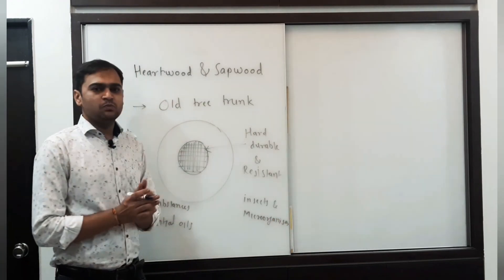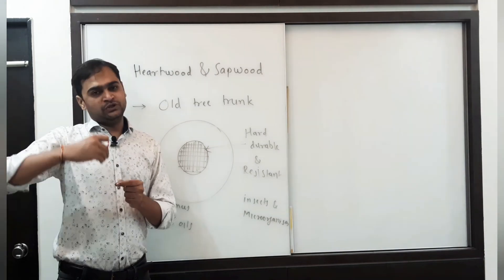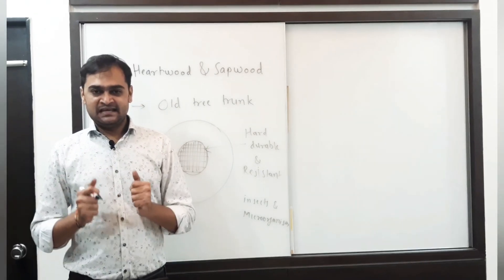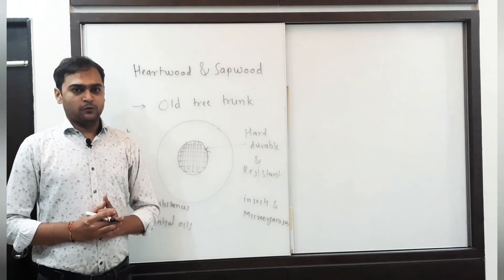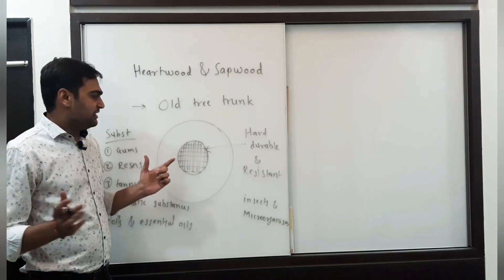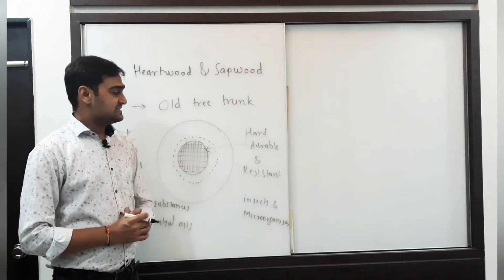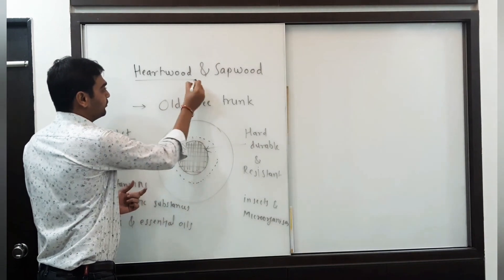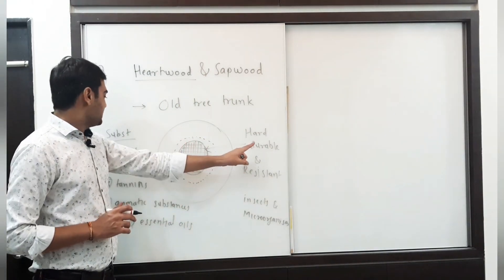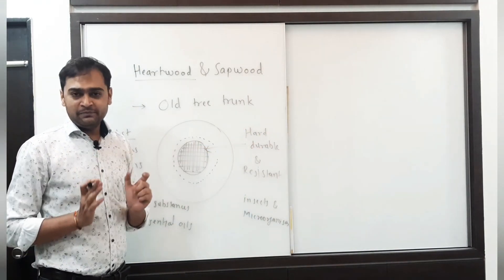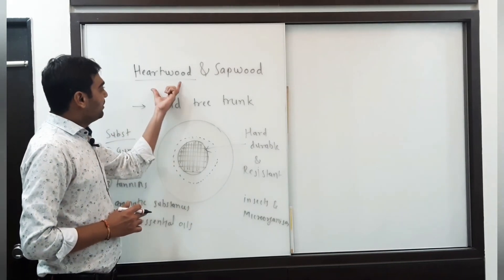Because this inner part becomes very hard, it loses its proper function of conducting sap from root to shoot. Since the tree has grown huge, its function now is to provide mechanical support. The secondary xylem part around this center continues conducting the sap. The non-conducting central part is called heartwood, and the part that conducts sap is called sapwood. Heartwood is located at the center, is harder, more durable, and resistant to insects and microorganisms, providing mechanical support.